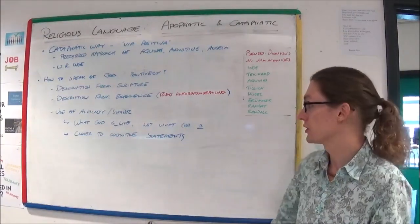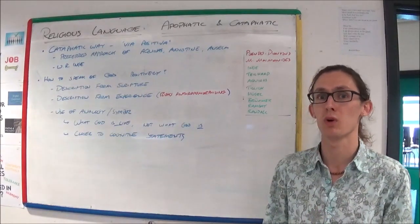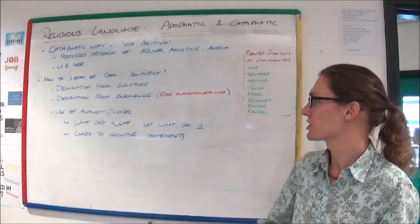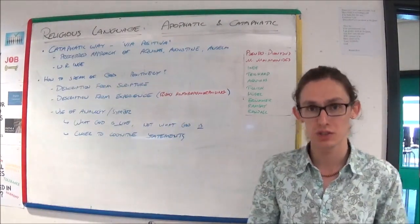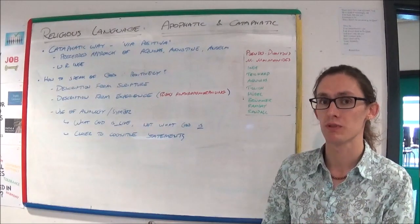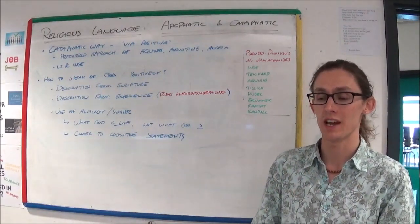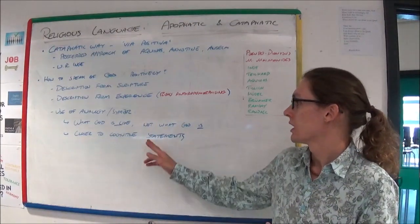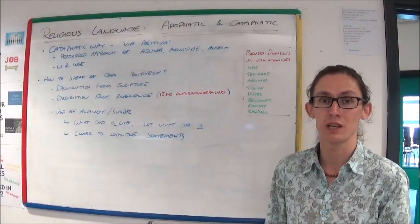Now, analogy and symbol are good because they tell us what God is like, rather than what God is. So it gets rid of that risk of anthropomorphism. Maybe not quite as specific. It's either of these two options. But it does at least provide a way of understanding God that doesn't say that God is like humans.